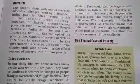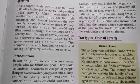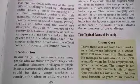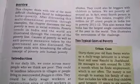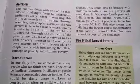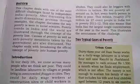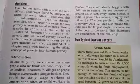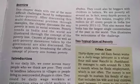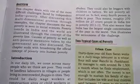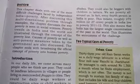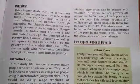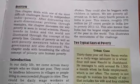They can also be child workers in dhabas or even beggars. As per the poverty report of 2011-12, roughly 270 million, that is 27 crore people in India, live in poverty. This means India has the largest single concentration of the poor in the world, where every fourth person is poor.